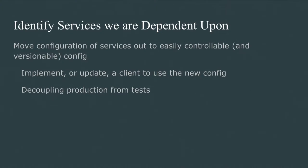Once we identified the services we were using, we moved their configuration out into easily controllable and versionable configuration. We wanted to be able to provide a version of configuration usable for either production or test running of the application without having to rebuild or redeploy the whole binaries. This meant implementing or updating the clients of these services to use the new configuration — some code became local to our application rather than part of the framework — but it achieved the effect of decoupling our application from production for the purpose of running our tests.